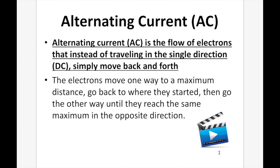Alternating current, or AC. Alternating current is the flow of electrons that, instead of traveling in a single direction, simply move back and forth. DC has electrons going from point A to point B, whereas in AC we still get a net flow of electrons from point A to point B, but the electrons themselves don't actually move from here to there. In AC current, our electrons only shift slightly.